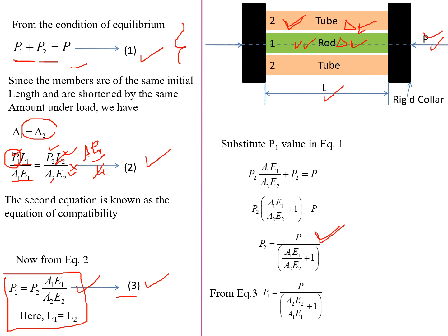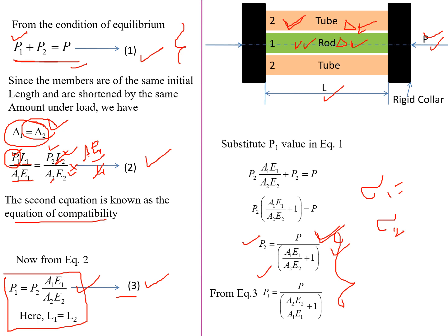This is the solution for determining the load on the composite bar. Once we know P1 and P2 — the loads on the rod and tube respectively — we can easily determine the stresses. Stress equals load divided by cross-sectional area. Using P1 and P2, the stresses in each member are found by dividing by the respective cross-sectional areas. Remember: use the equilibrium condition (P1 + P2 = P) and the compatibility condition (delta 1 = delta 2) to solve composite bar problems. Thank you.